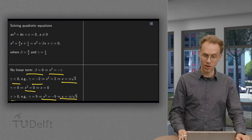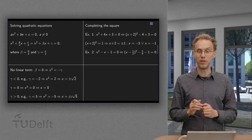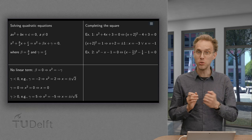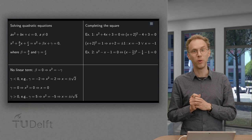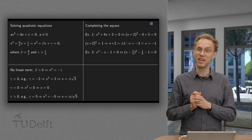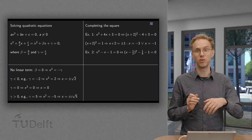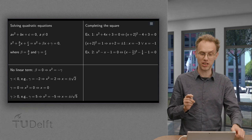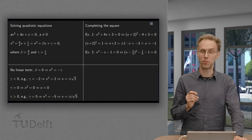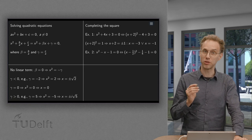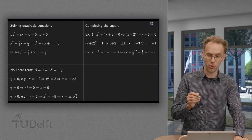What can we do if we do have a linear term? We can try to get rid of it, to reduce to the first case. We can do so by a procedure called completing the square.